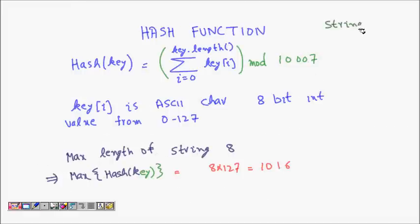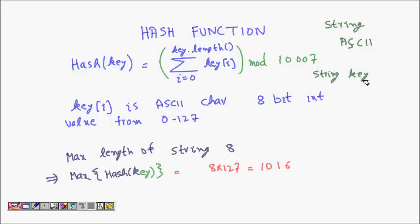Let's look at a few problems with strings. How do we manage strings for hashing? The first thing is that strings are not numeric, so you need to take their ASCII values. We have a key that is a string — a character array — with key[0], key[1], and so on. How do we find the hash function?